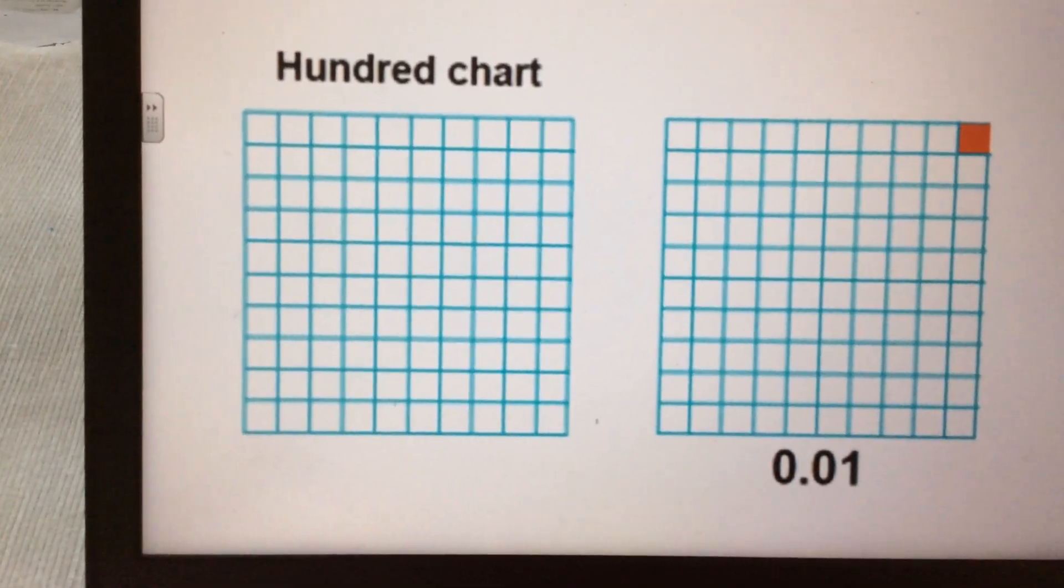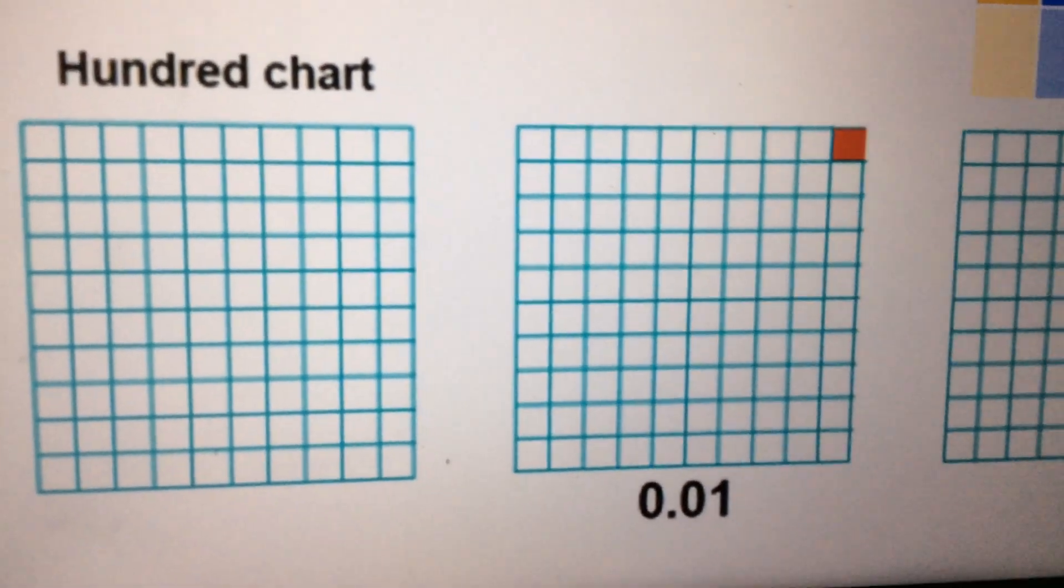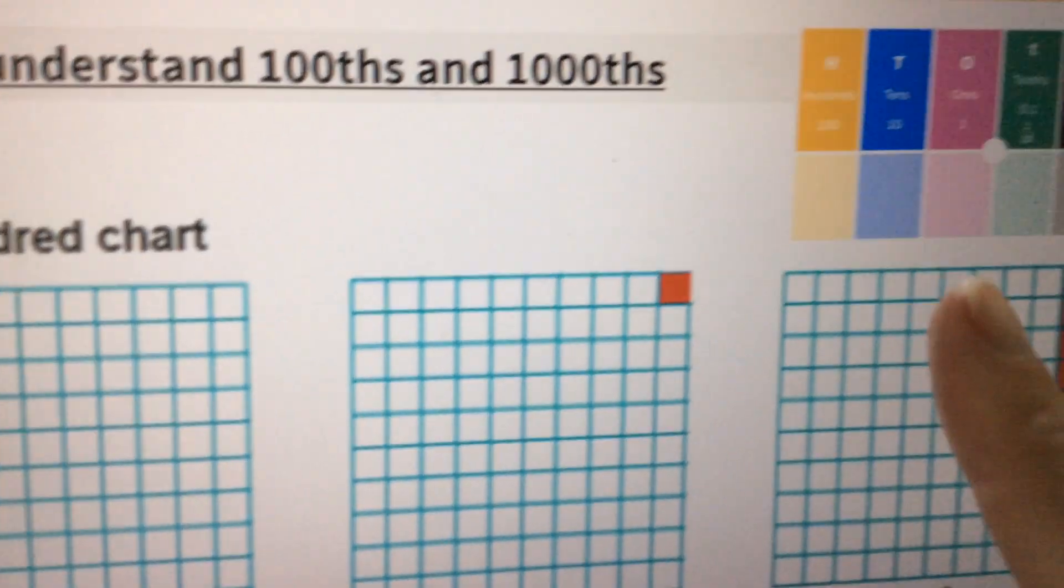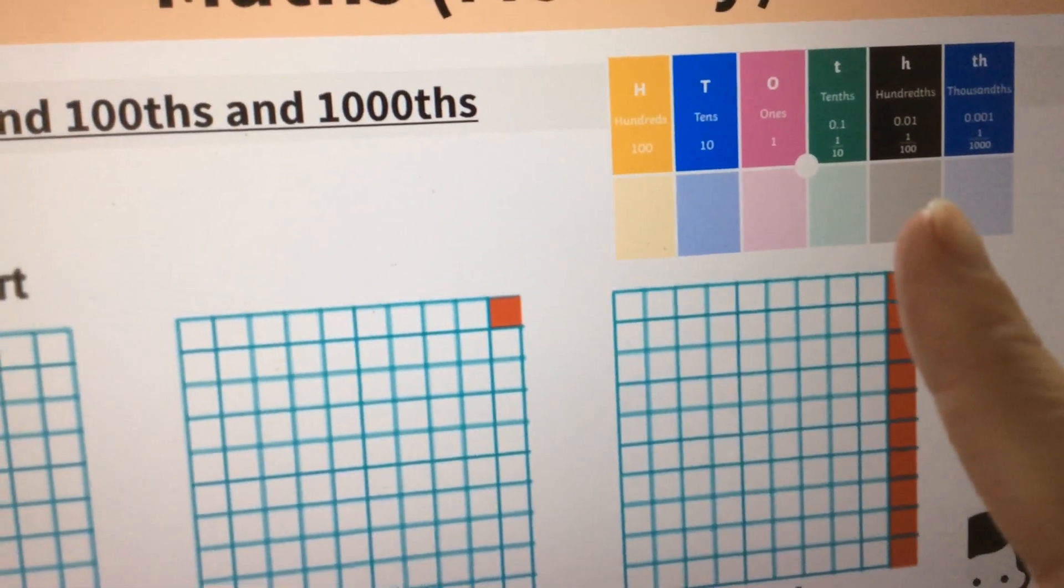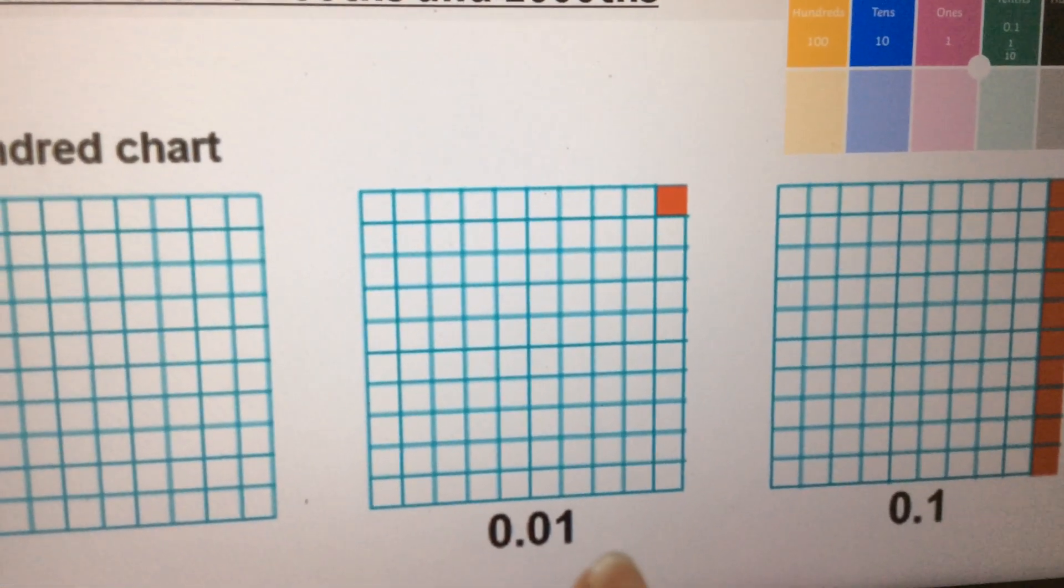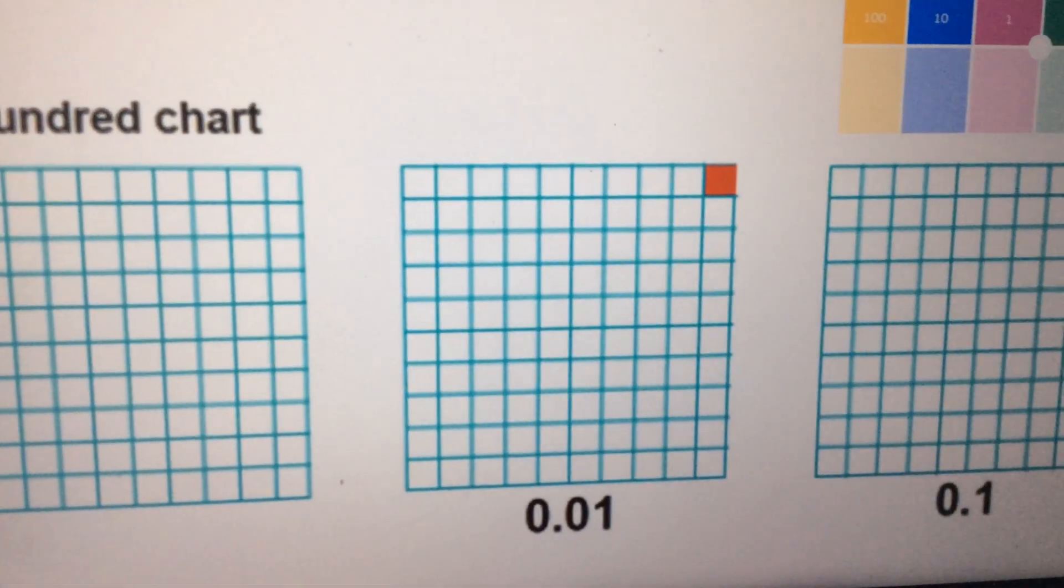So this first one we've got a hundred charts divided into a hundred equal pieces. For this second one we've got 0.01. Now that if we're not sure we can check here is that second column after the decimal point, so that is one hundredth and we can see there one hundredth of that square has been coloured in.